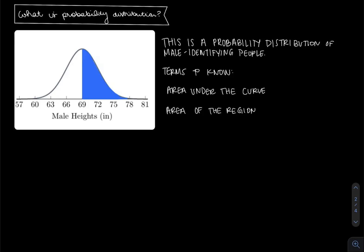Notice this picture of what looks like a bell curve to the left of the screen. It's defined as male heights in inches, running from 57 inches all the way through 81 inches. This is a probability distribution of male-identifying people.